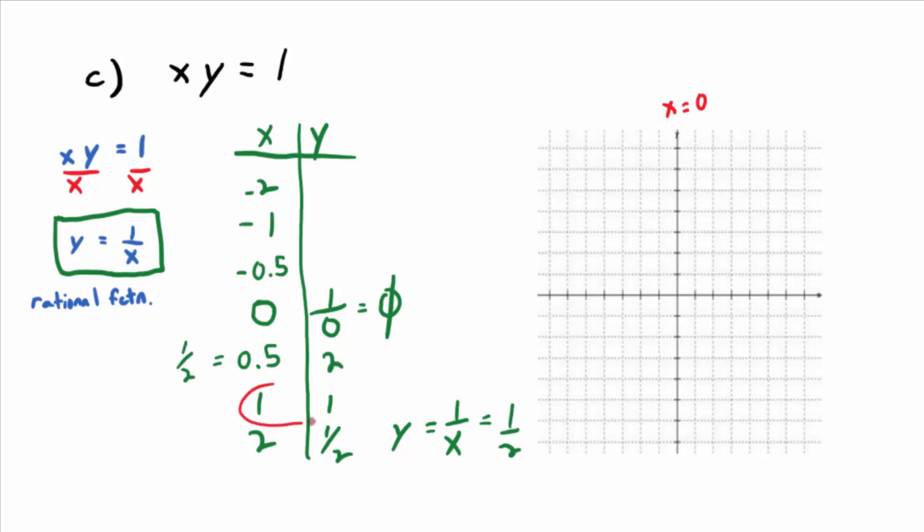So what do you end up with? Well, we know it goes through one, one. And we know it goes through two over two up one half. That's this point. And then we know it goes through one half two. So you go over one half, it goes up two.